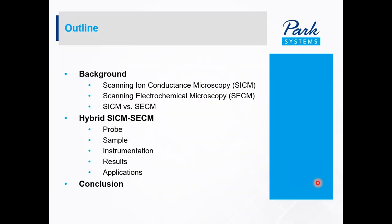Now, after the short introductory remarks about our company, let's get started. Here is a brief outline for today's presentation. I will first give you some background information, including how scanning ion conductance microscopy, or SICM, works, and then how scanning electrochemical microscopy, or SECM, works. Then I will talk about both the advantages and disadvantages of the two systems, which will lead to the topic I will be covering today: hybrid SICM-SECM. I will break this into four main parts: probe fabrication, the sample, the experimental setup, and the results, as well as an interesting application. Finally, I will close with a conclusion.